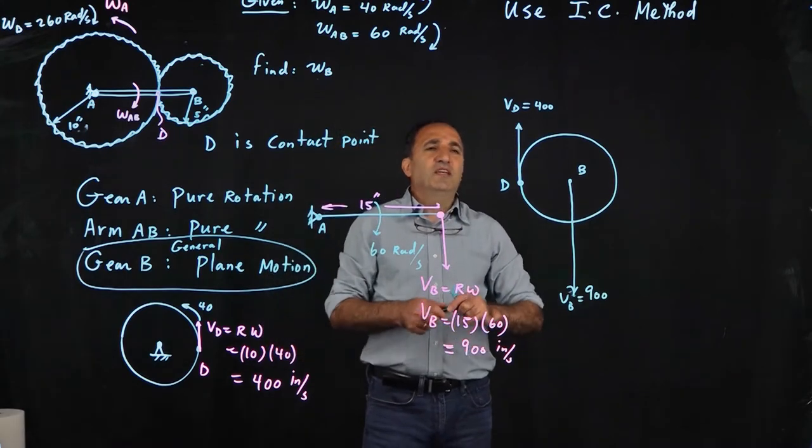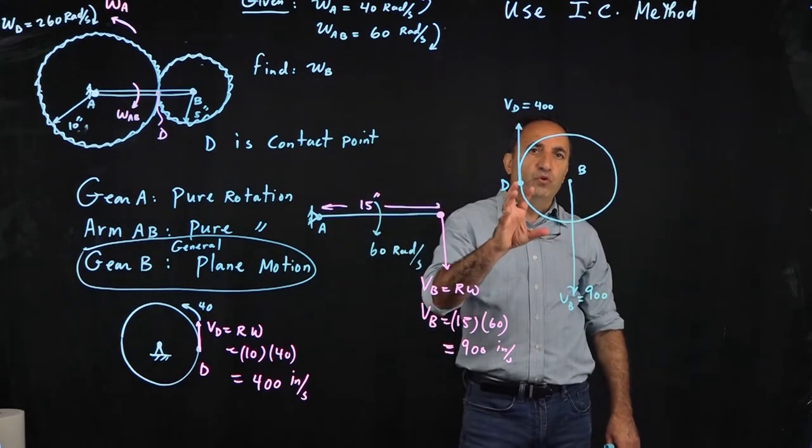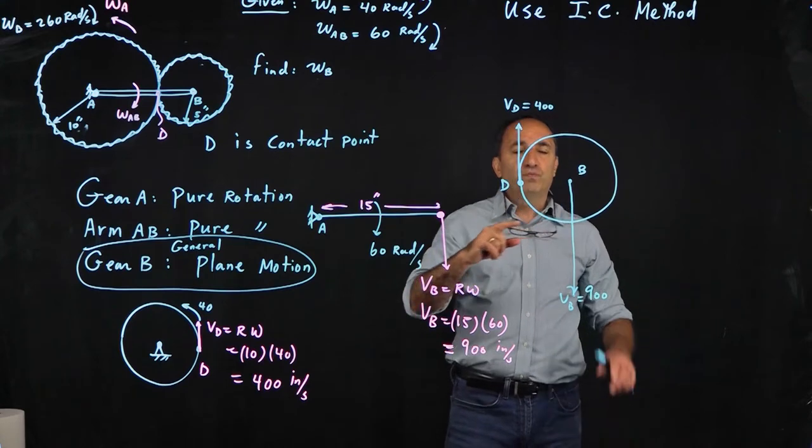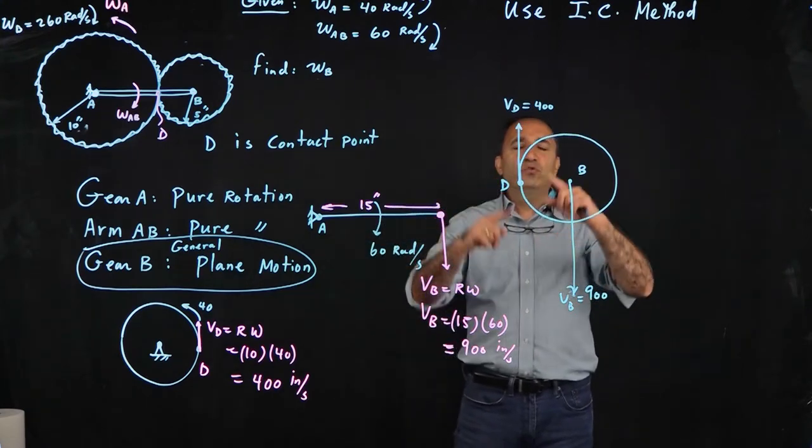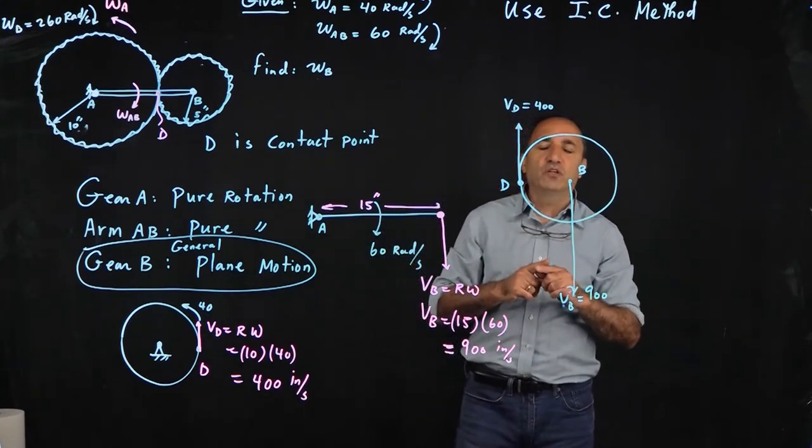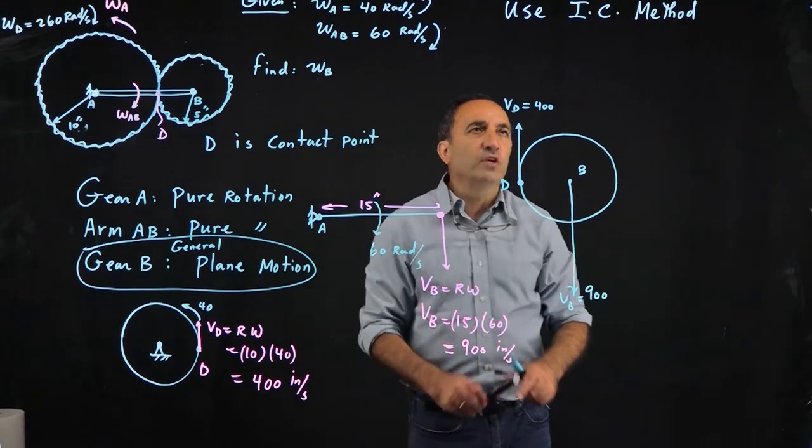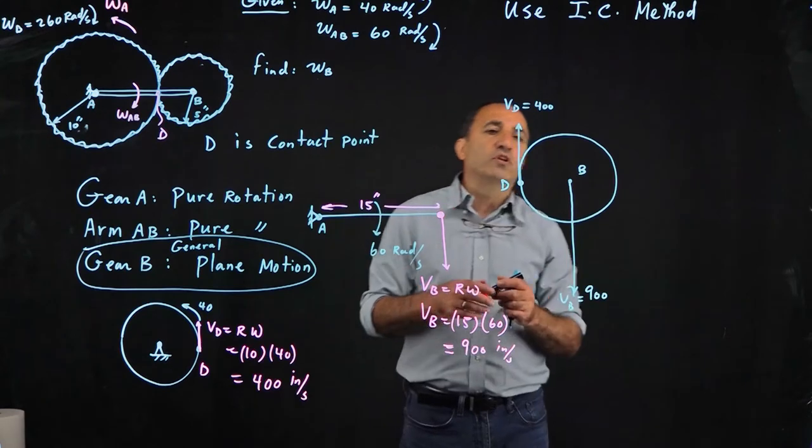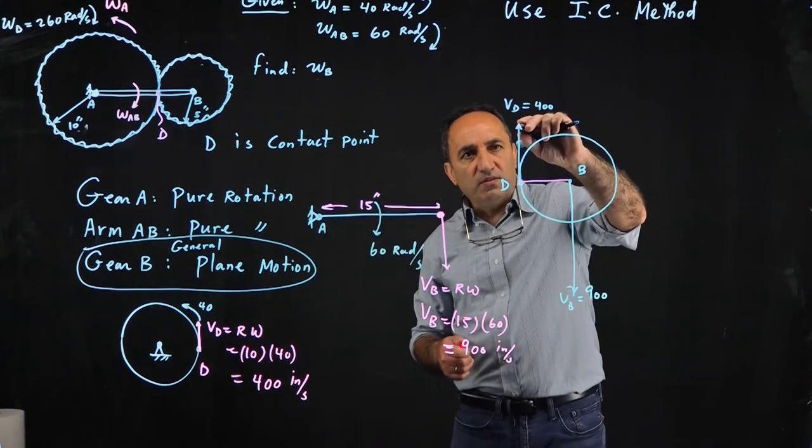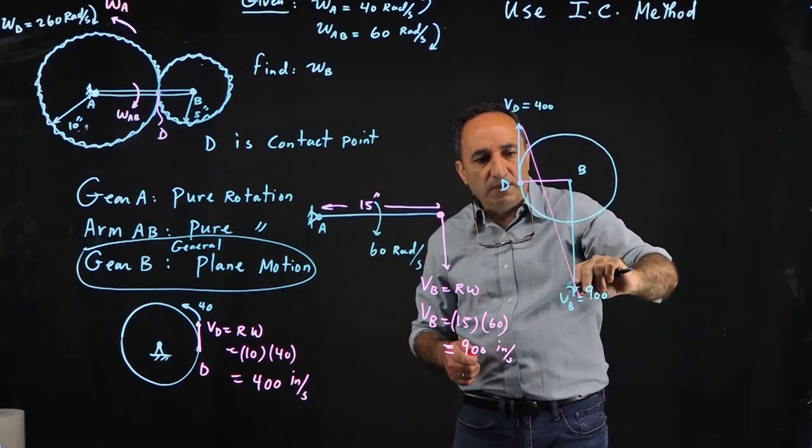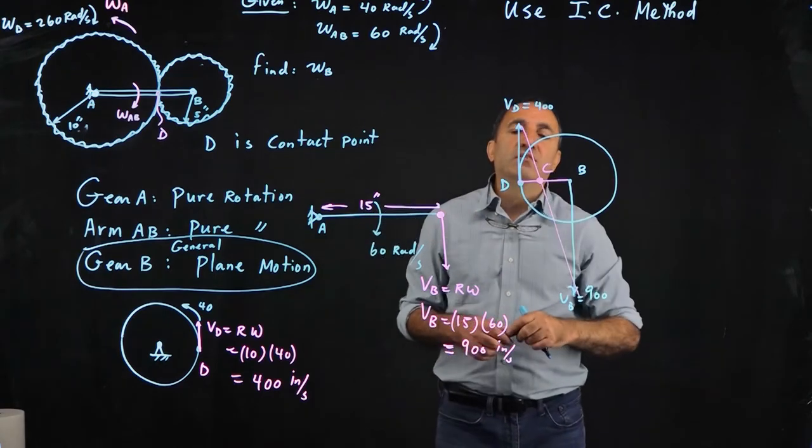So the instantaneous center, if you have velocity of two points, and by the way this is a special case. In general, if you have velocity of two points, you draw perpendicular lines to the two velocities and the point of intersection becomes the instantaneous center. But what if the two velocities are parallel to one another? That's the special case. Velocity of D and B are parallel to one another. So how do you locate the IC, or point C as I call it, the center of rotation? You connect point D to B, and then you connect the extremities of velocity of D and velocity of B. The point of intersection, I call point C. That's the way you locate the instantaneous center.